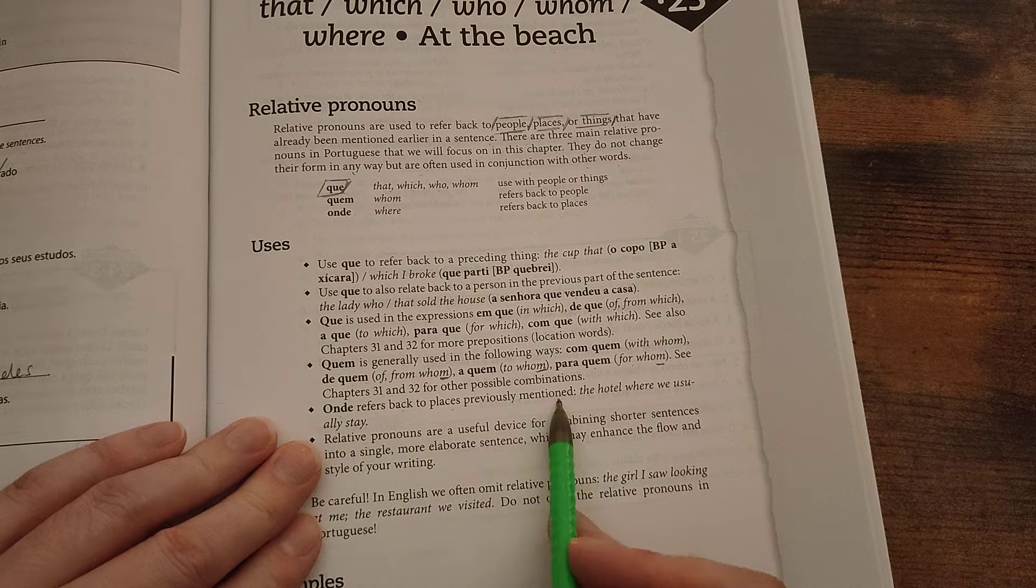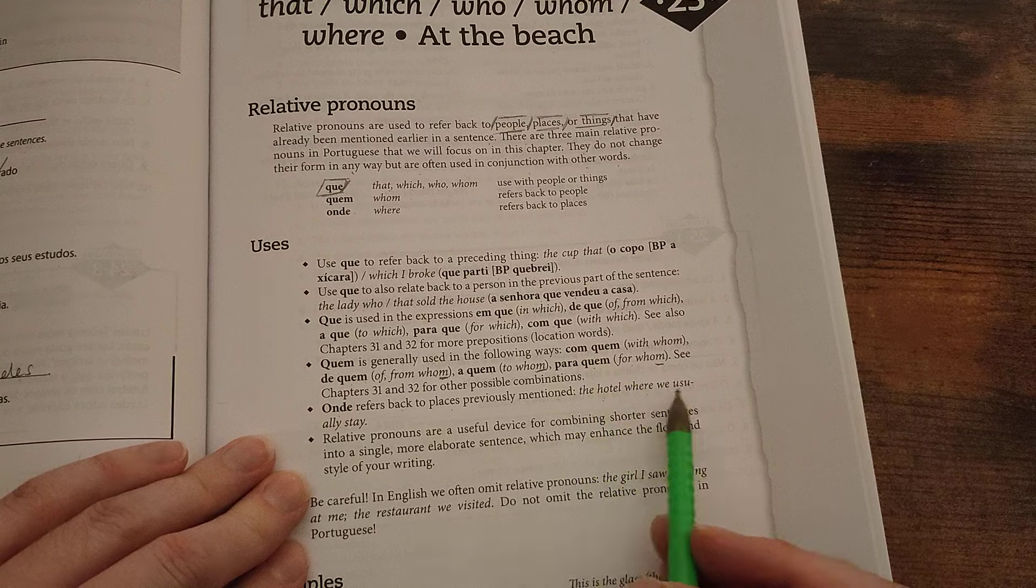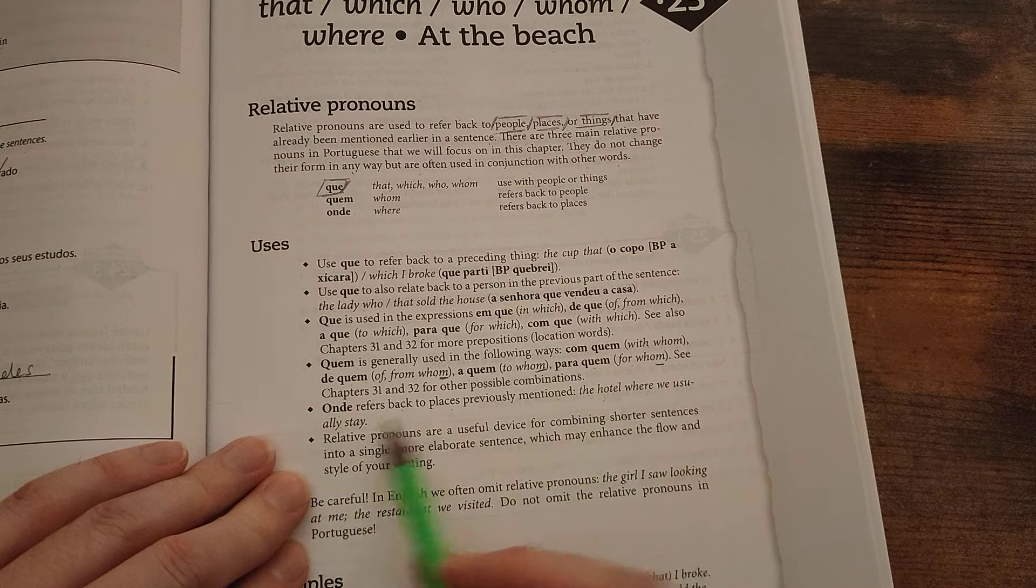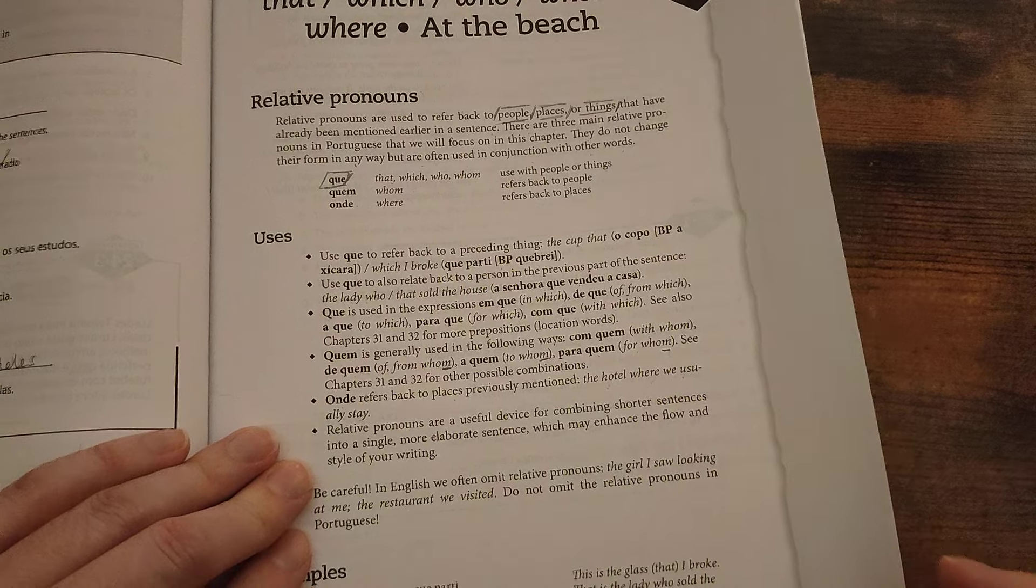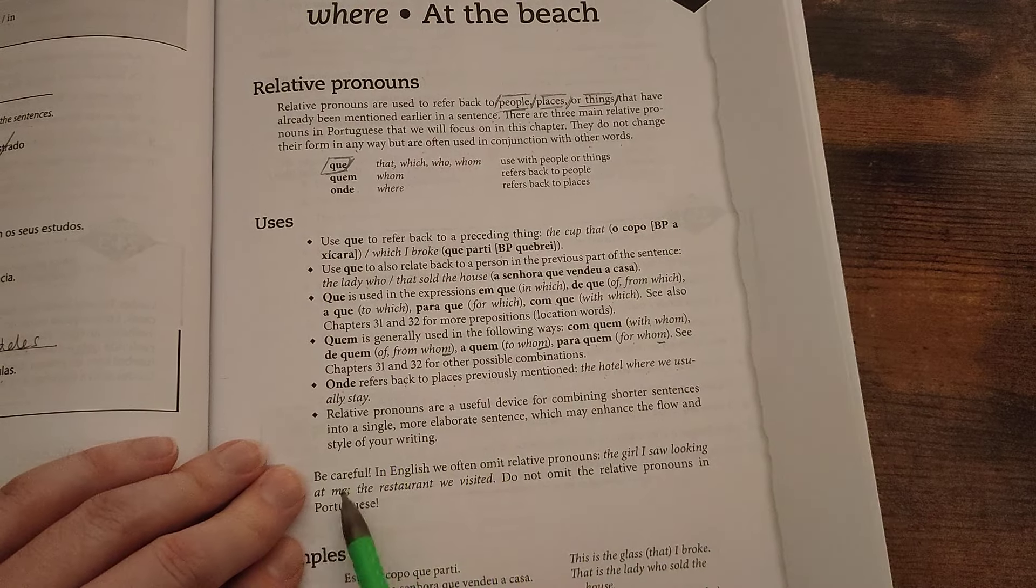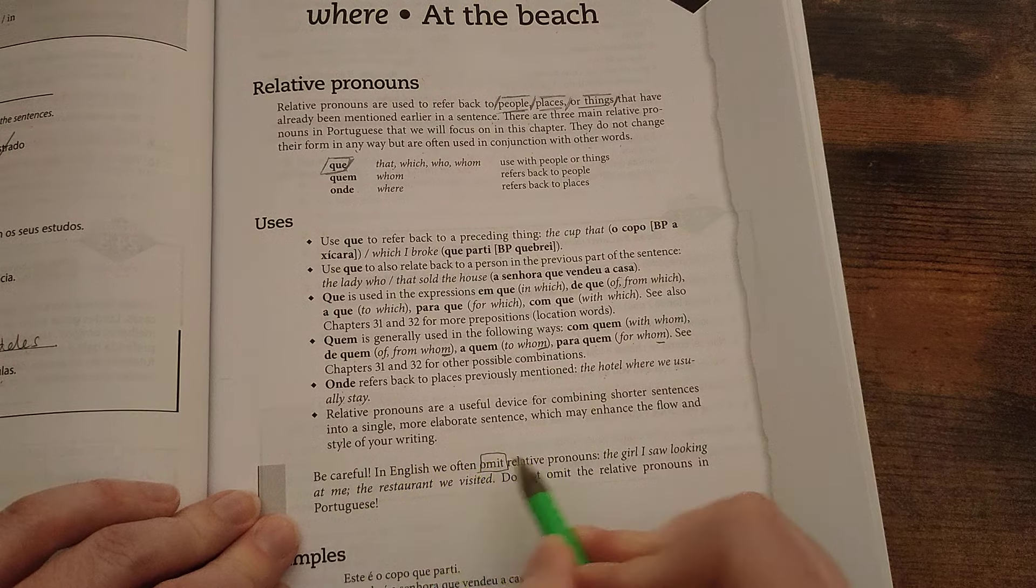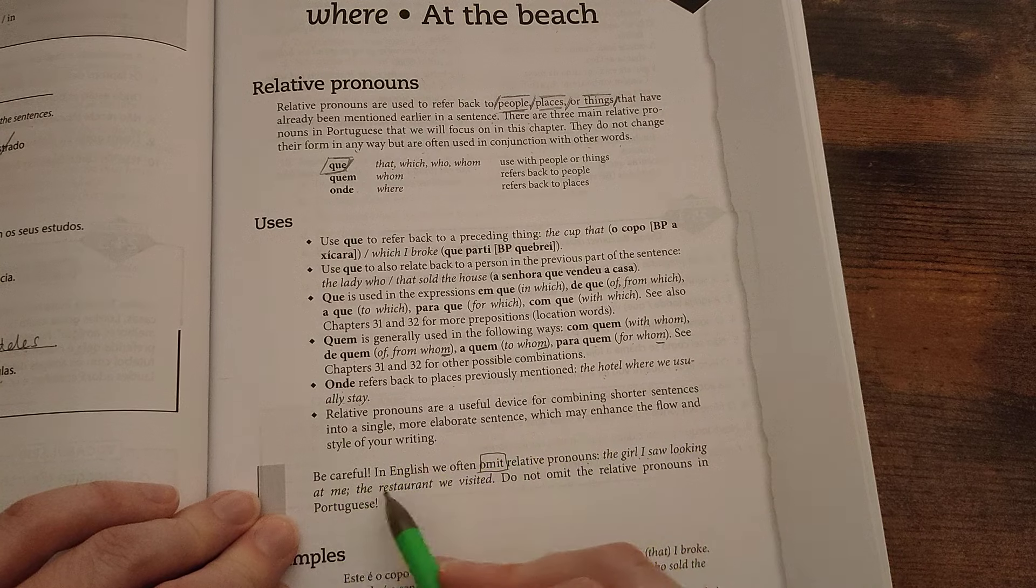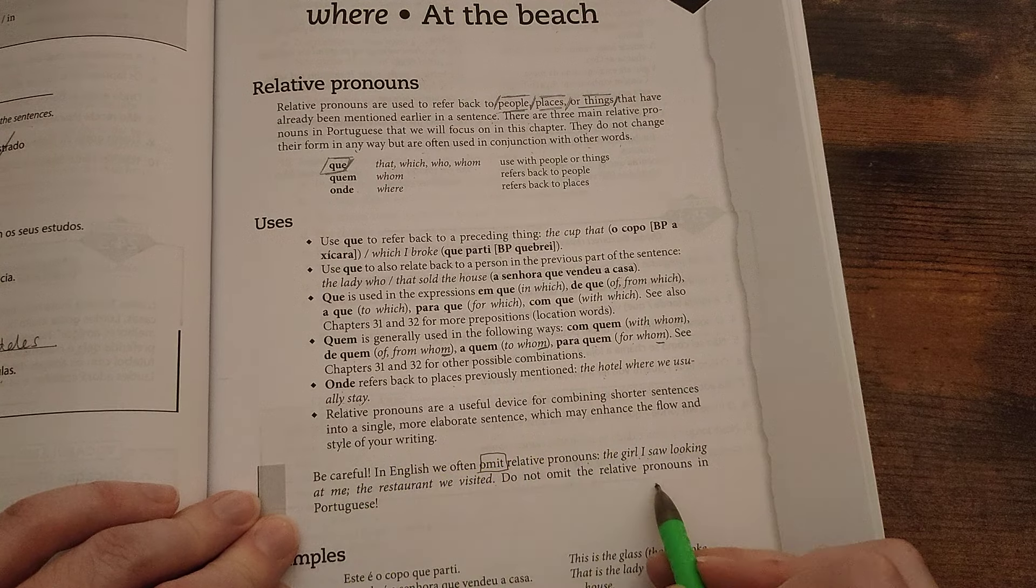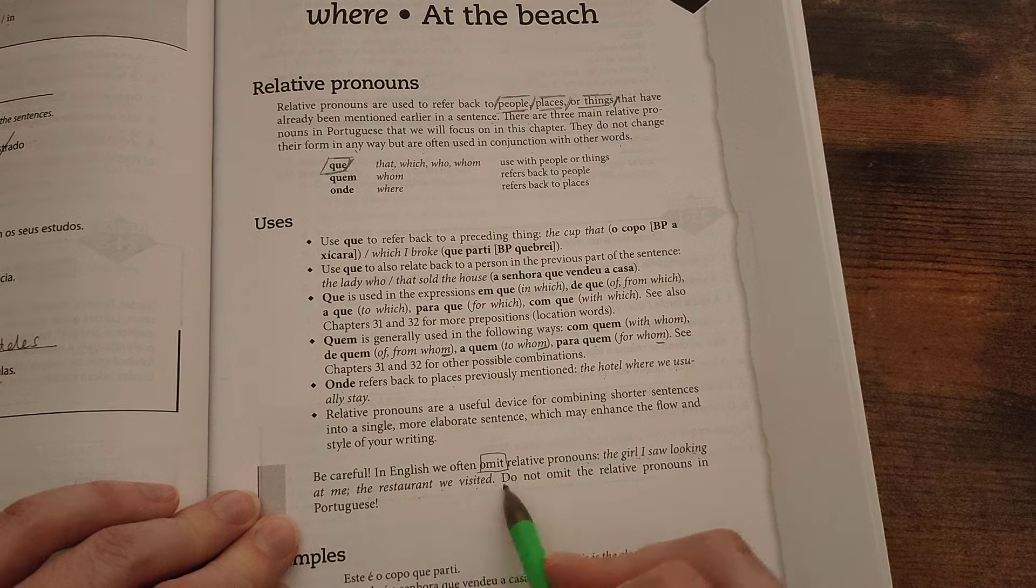Onde refers back to places previously mentioned. The hotel where we usually stay. Hotel onde nos quitamos normalmente. Be careful, in English we often omit relative pronouns. The girl I saw looking at me. The restaurant we visited. The girl that I saw looking at me. The restaurant that we visited.